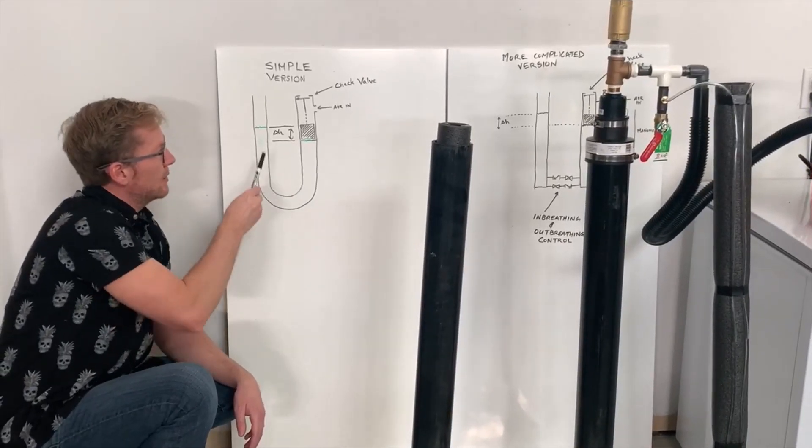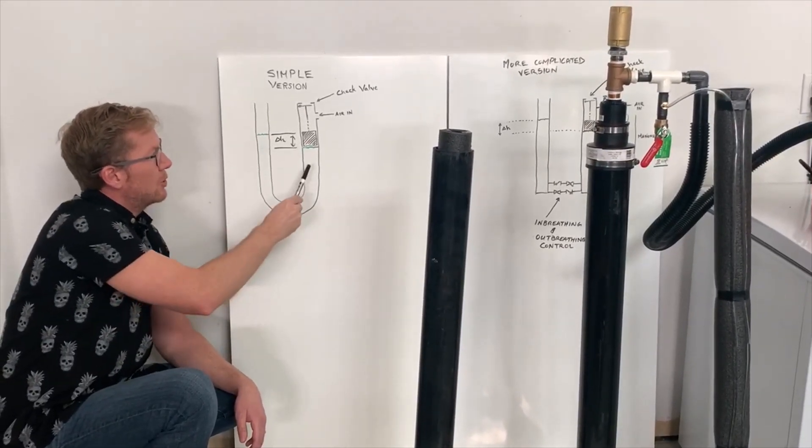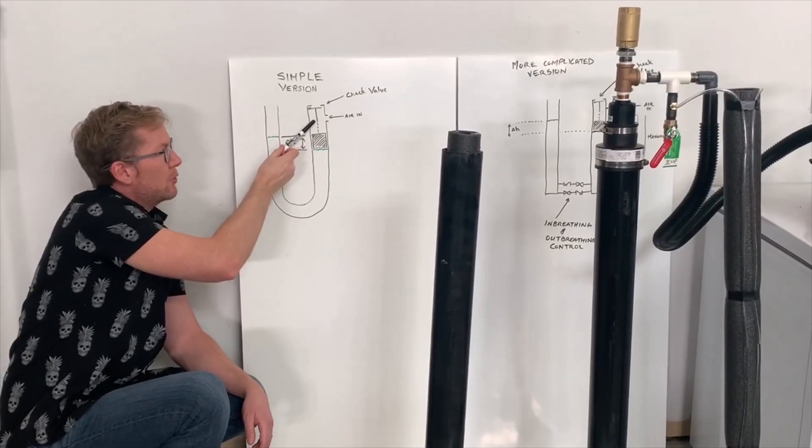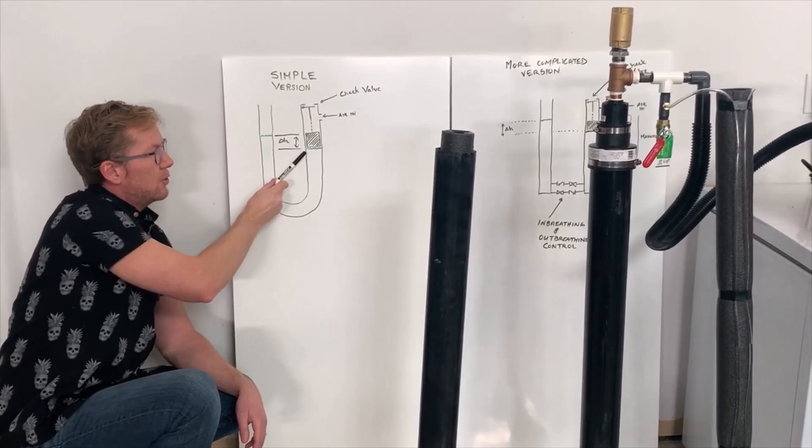The way this design essentially works is it's a U-tube partially filled with water, a check valve on one side of the U-tube with a push rod and a short length of chain attached to a float.